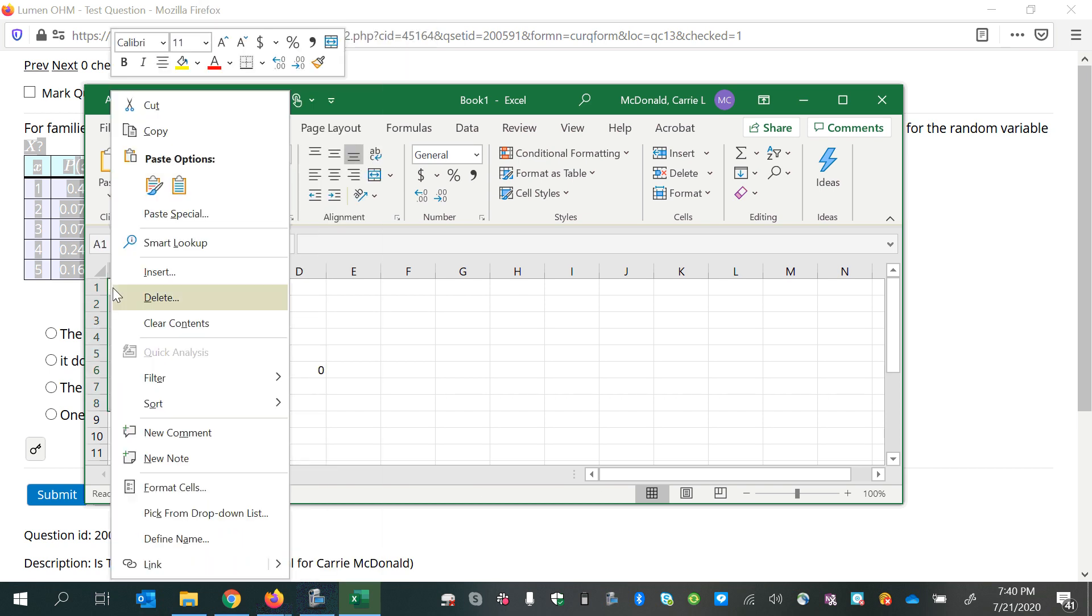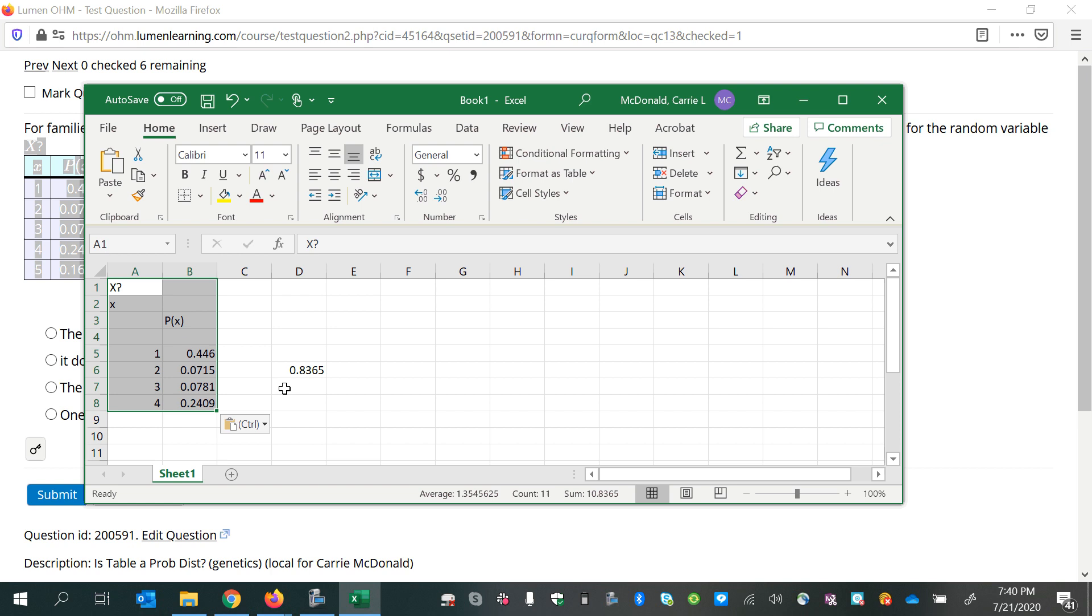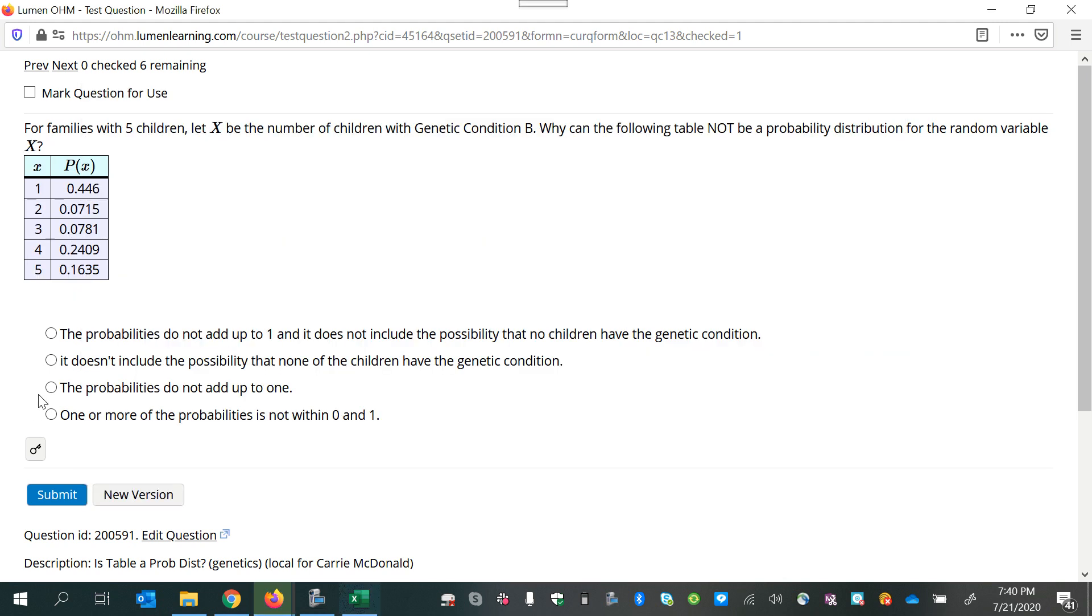Click contents and paste. Make sure my sum is containing all the probabilities. Okay, and so now it's less than one. So now my better answer would be that the probabilities do not add up to one and zero is not represented here.